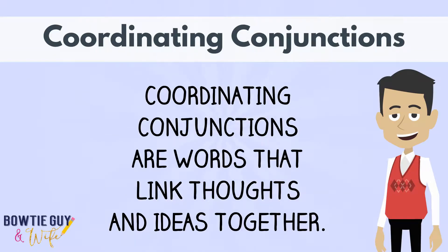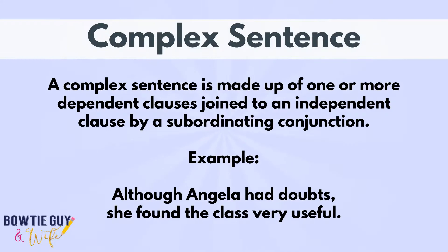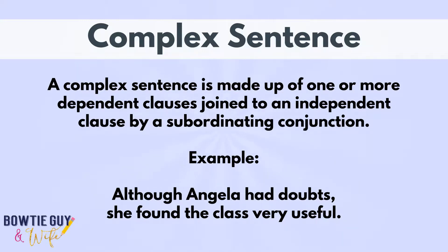Coordinating conjunctions are words that link thoughts and ideas together. A complex sentence is made up of one or more dependent clauses joined to an independent clause by a subordinating conjunction. Here's an example: Although Angela had doubts, she found the class very useful. 'Although' is the subordinating conjunction.